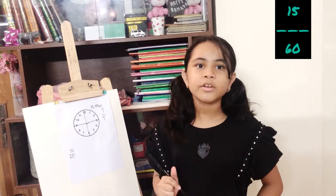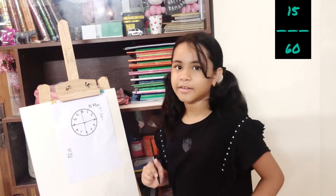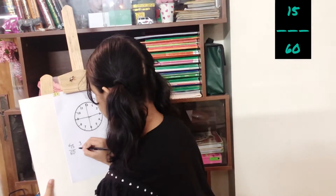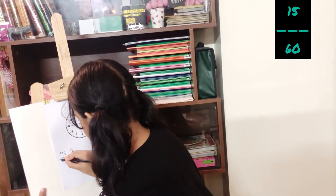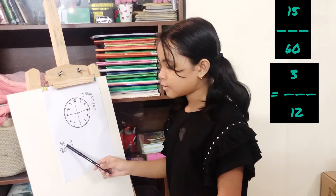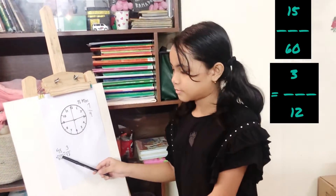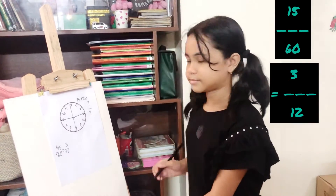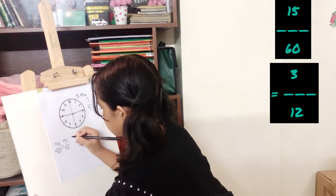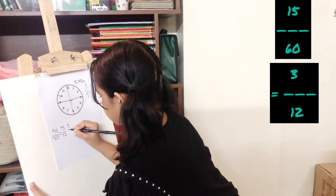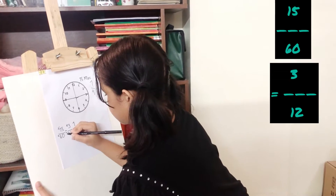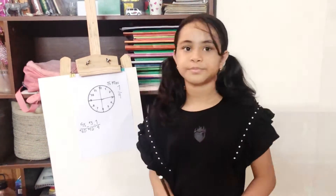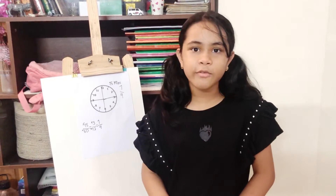We can divide both 15 and 60 by 5. So 5 threes are 15 and 5 twelves are 60. Again, we can divide both 3 and 12 by 3. Here, 3 ones are 3 and 3 fours are 12. So 15 minutes is 1 by 4 of an hour.